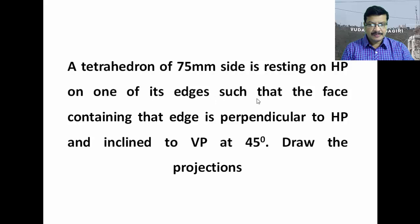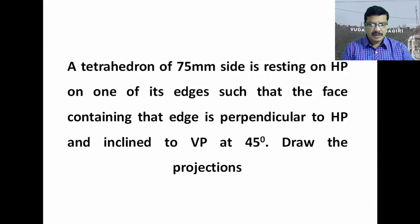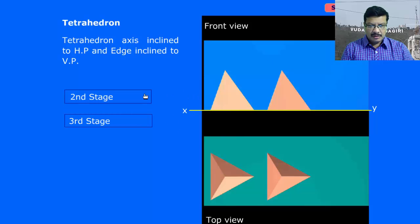Here, one face is perpendicular to HP. The face of the tetrahedron being perpendicular to HP means the axis is inclined to HP. So to get this simple position, keep the axis perpendicular to HP. When the axis of the tetrahedron is perpendicular to HP, the true shape and size of the base is visible in the top view. So start the problem from the top view and project the front view. Observe the various stages in this problem — this is the first stage.